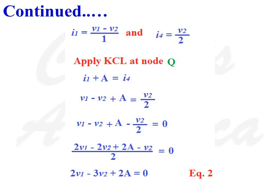Applying KCL at node Q: I1 plus A is equal to I4. So (V1 minus V2) plus A equals V2 divided by 2. Rearranging with LCM of 2: 2V1 minus 2V2 plus 2A minus V2, all divided by 2, equals 0. Therefore 2V1 minus 3V2 plus 2A is equal to 0. This is Equation number 2.